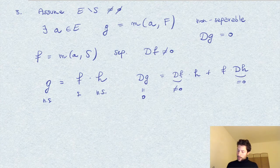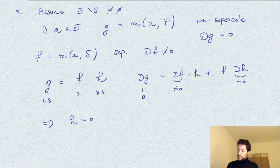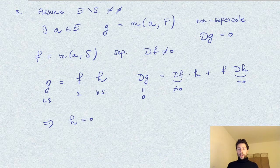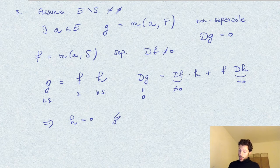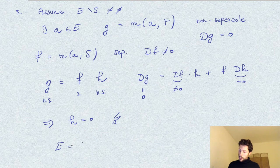And so, by this, we get that DF times H must be zero, which is, of course, a contradiction. Therefore, our initial assumption was not correct, and we conclude that E is equal to S.